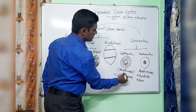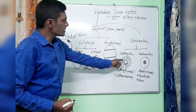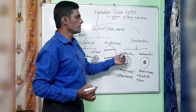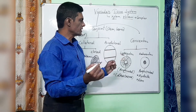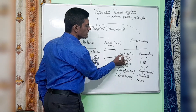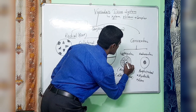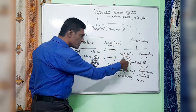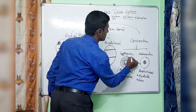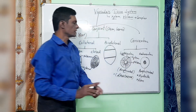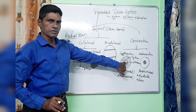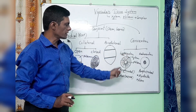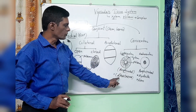Leptocentric is otherwise called an amphivasal type. The word 'lepto' comes from phloem tissue. Leptocentric means the phloem is at the center — the group of cells present at the center are phloem tissue, and they are surrounded by xylem. If the phloem tissue is surrounded by the xylem tissue, this type of arrangement is called leptocentric, and it is mostly found in monocot plants — for example, Dracaena.